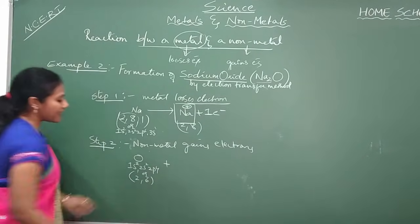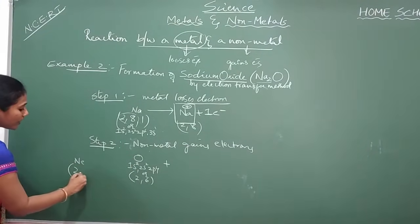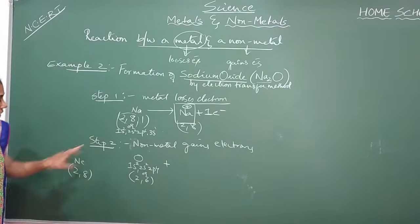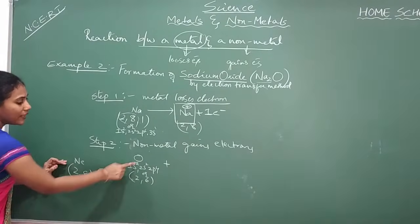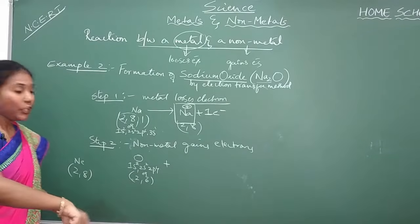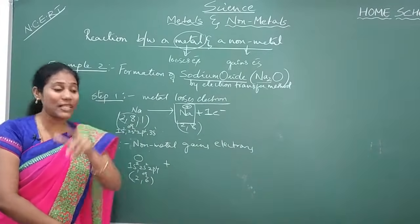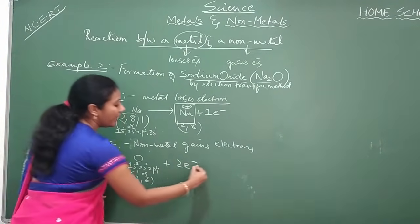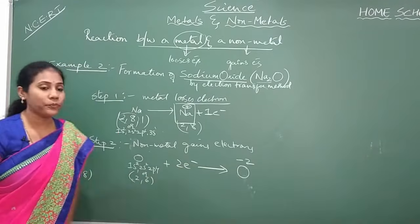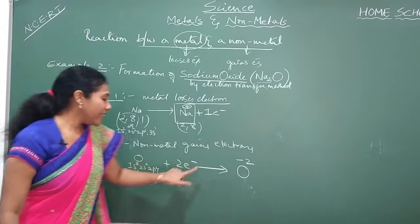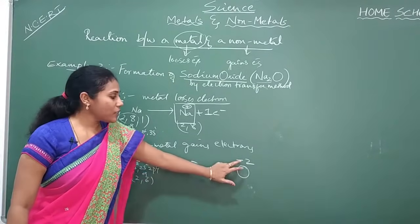How many electrons does oxygen gain? Who is the nearest noble gas for oxygen? Neon. Neon's electronic configuration is 2, 8. So what is the difference? It is 2. That means oxygen needs 2 electrons to get the electronic configuration of neon. So oxygen gains 2 electrons. On gaining 2 electrons, your oxygen becomes O²⁻. This is the oxide ion.